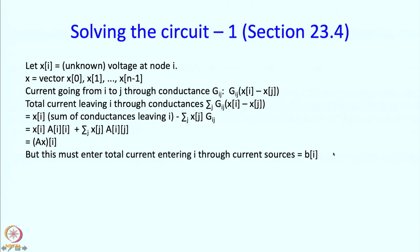We have to solve Ax equal to B because we know Ax must equal B and x is the only unknown. This vector of unknowns can be found if we solve this matrix equation.